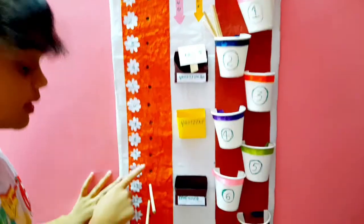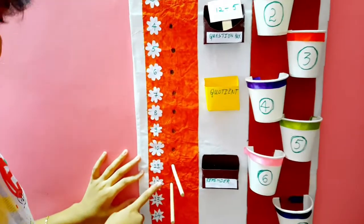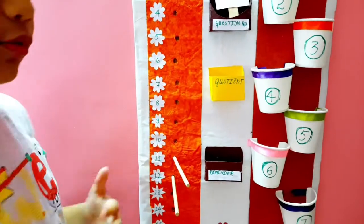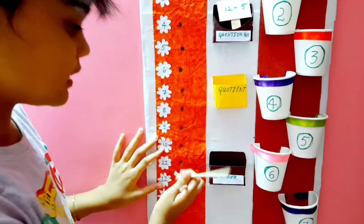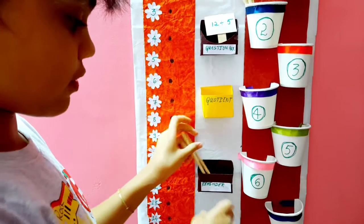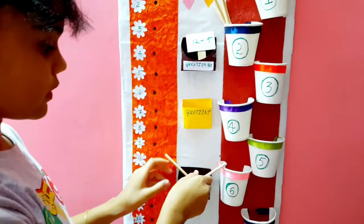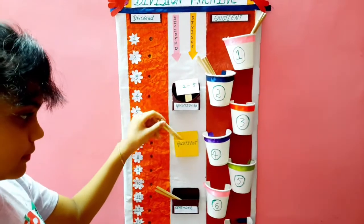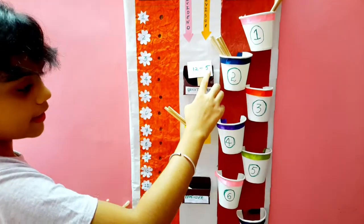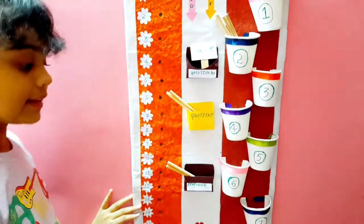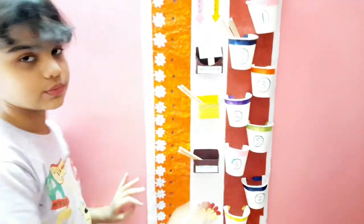We still have some sticks left. But, we have to pick up 5. There are only 2 left. So, we have to take this and keep it in the reminder box. So, the quotient is 2. For 12 divided by 5, the quotient is 2 and the reminder is 2.